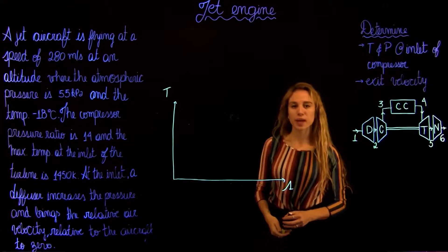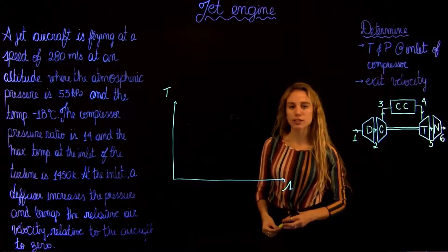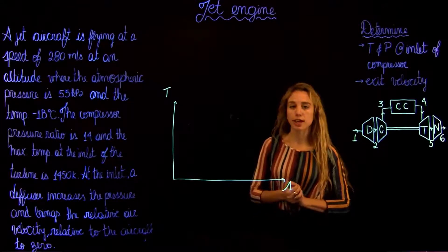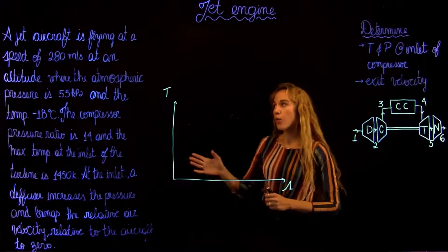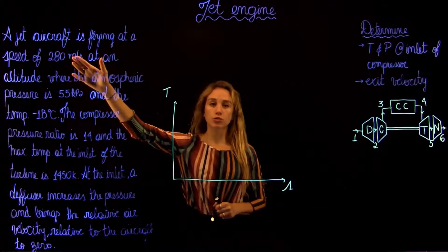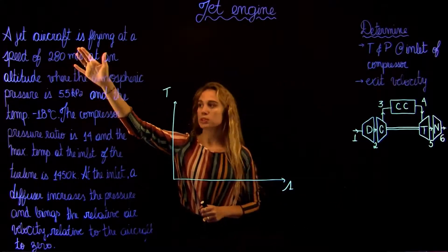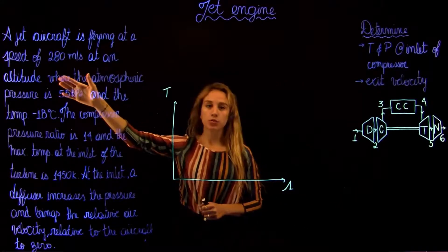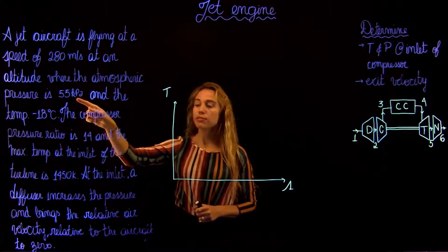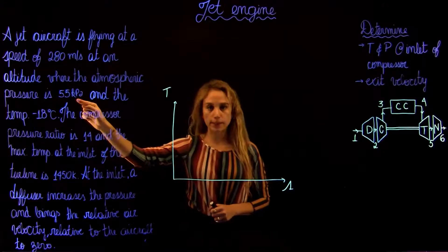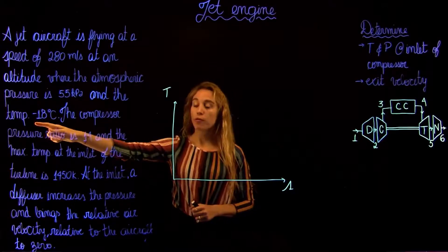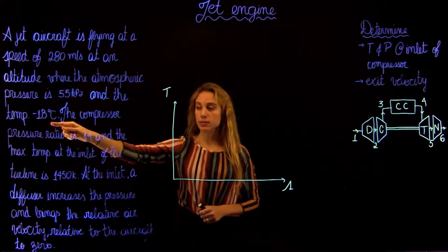Hello and welcome back to Thermodynamics 2 Tutorials with Maria. We're going to be solving a jet engine problem. We have a jet aircraft flying at 280 meters per second at an altitude where the atmospheric pressure is 55 kilopascal and a temperature of minus 18 degrees Celsius.